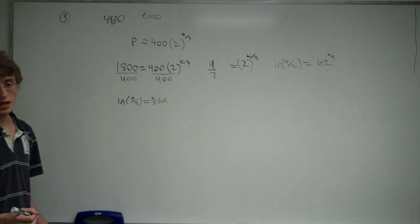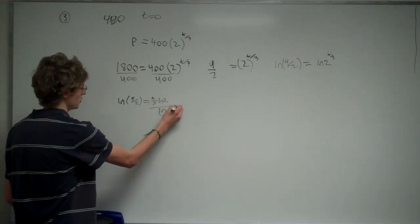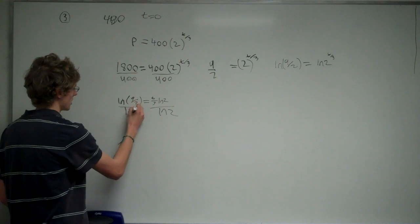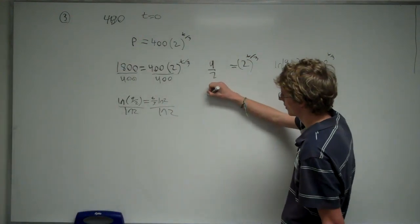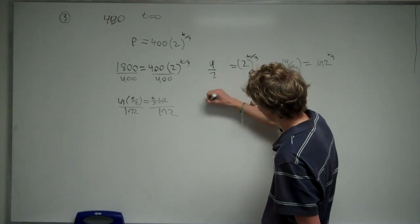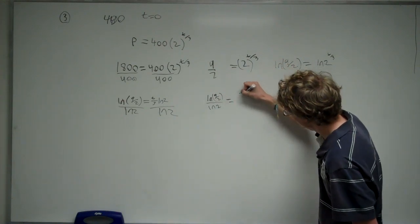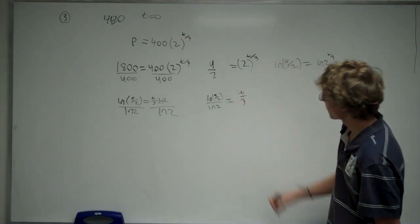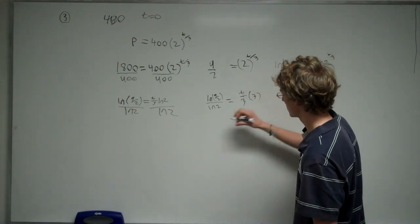So that's going to give us this value. And now from here, we would just divide by ln of 2, get that onto this side. And the last thing we would do is multiply by 3 onto both sides.